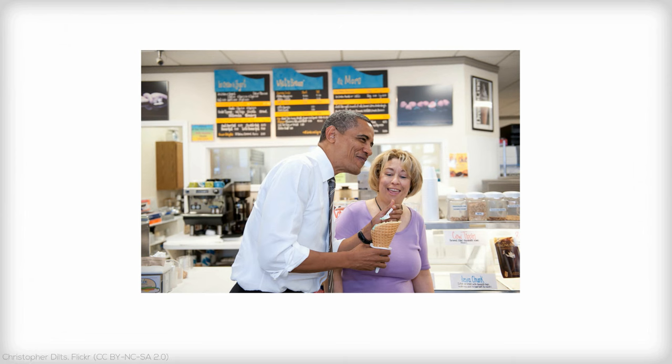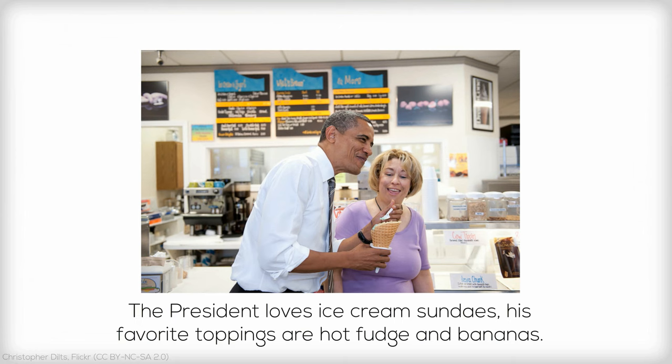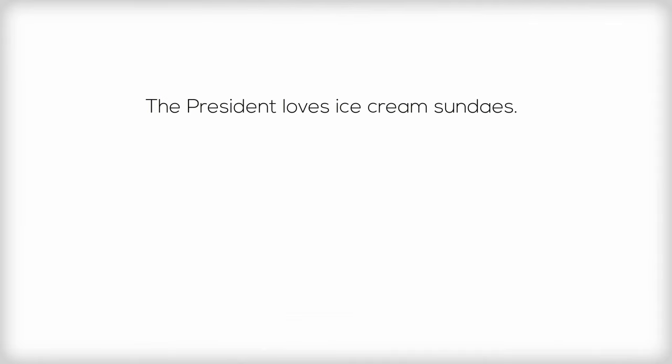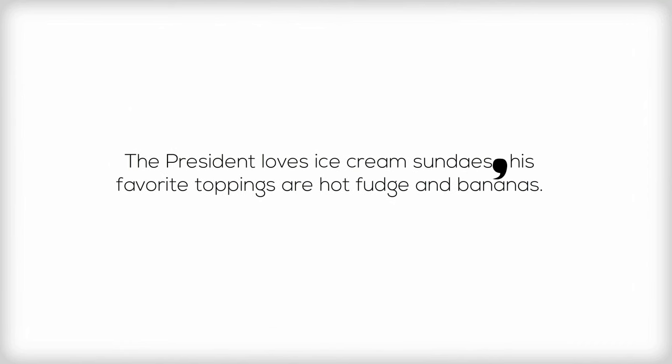Let's explain all of this with an example. Check out this sentence. The president loves ice cream sundaes. His favorite toppings are hot fudge and bananas. This is a perfect example of a comma splice. The two parts of the sentence are independent clauses because they make sense as individual sentences. The poor little comma can't handle both of them on its own. It needs help.